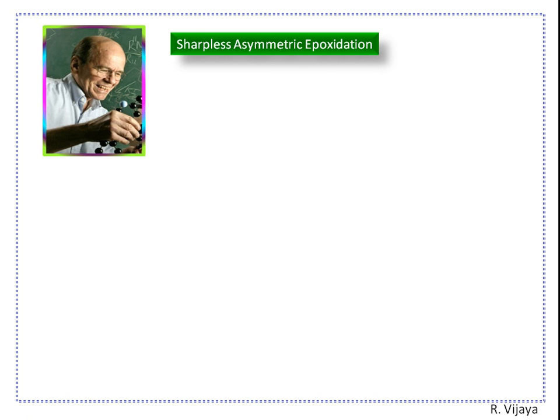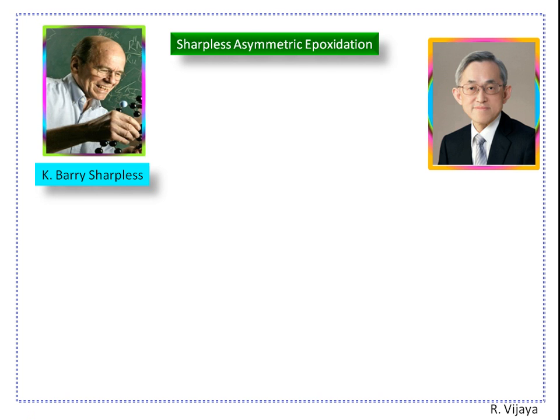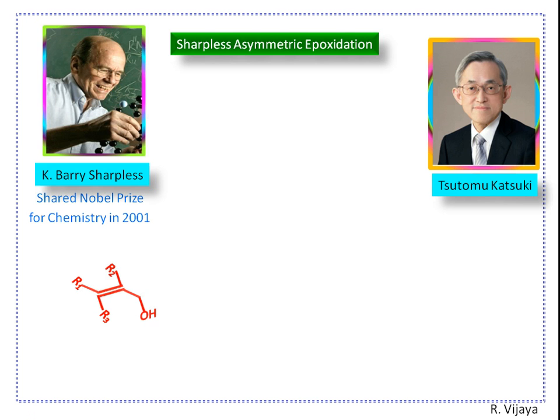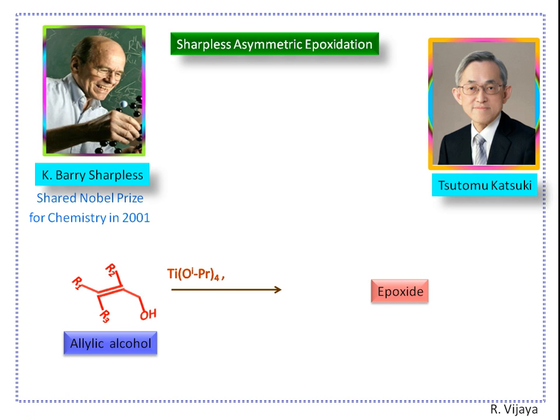In this video, we are going to discuss Sharpless asymmetric epoxidation. Sharpless and Katsuki made the discovery that allylic alcohols undergo enantioselective epoxidation in the presence of titanium tetra-isopropoxide, diethyl tartrate, dry tertiary butyl hydroperoxide, and powdered molecular sieves.